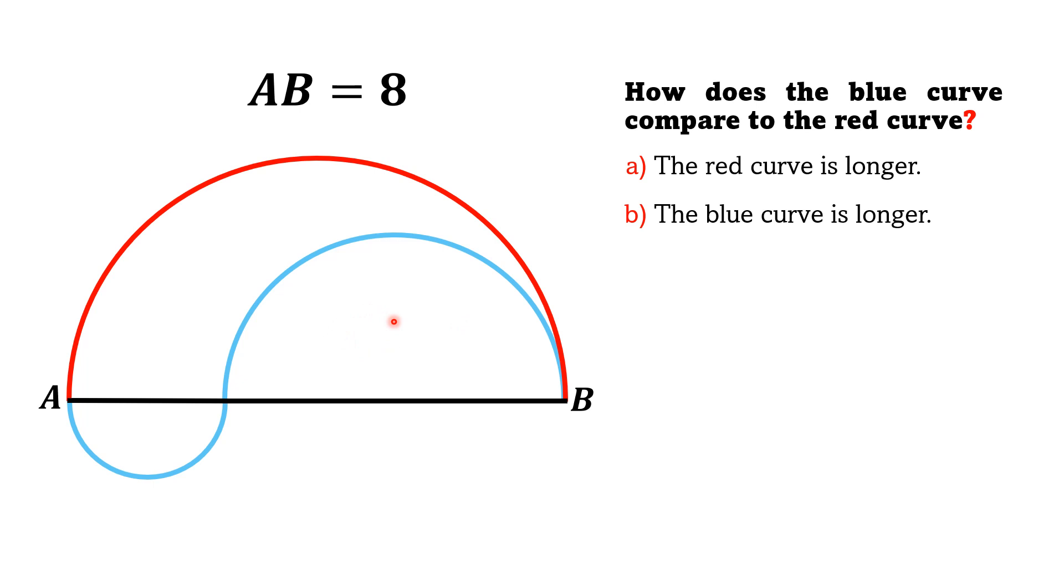c. both curves have equal length, and d. the relationship cannot be determined by the given information.